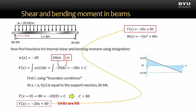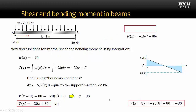The units on the shear function are kilonewtons. In this case, the distributed load has units of kilonewtons per meter, and the dx in our expression has the same units as the x dimension of the beam, which is meters. Multiplying those together gives us kilonewtons. We can check our shear function by plugging in a value of x equals 8 meters. We get that the shear is equal to negative 80 kilonewtons, which is consistent with what we're expecting at point B.